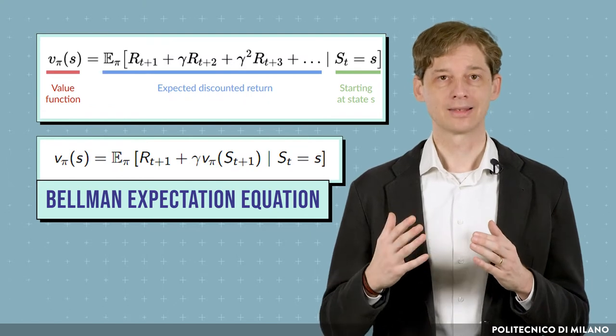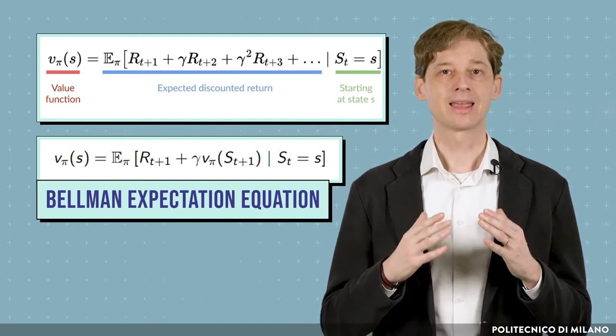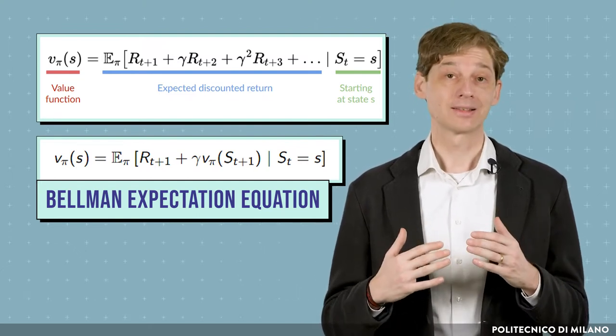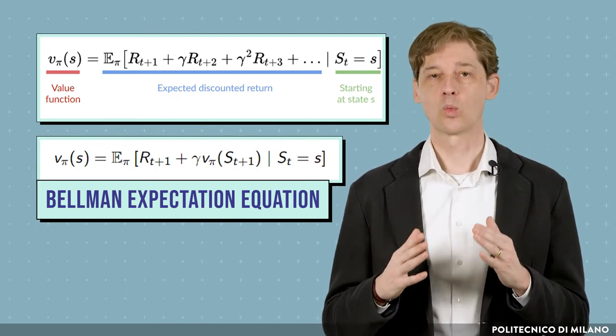the value of a state s can be expressed as the expected immediate reward that policy π can get from this state, plus the discounted expected value of the state that is reached after one step.